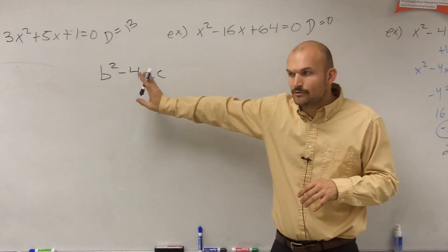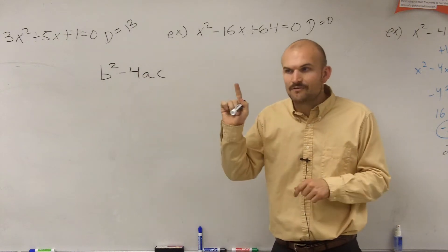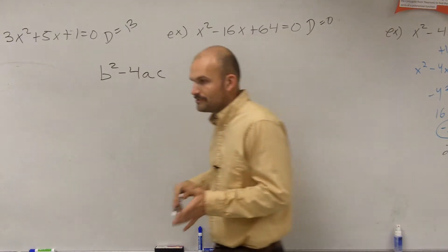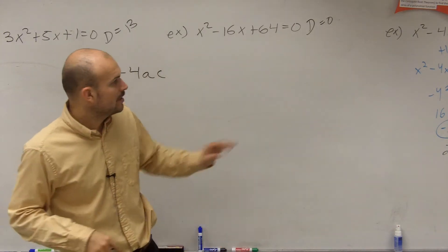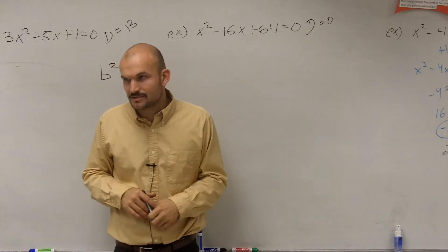If our discriminant equals 0, we only have one real solution. And if our discriminant is equal to a negative number, we end up having two complex solutions.